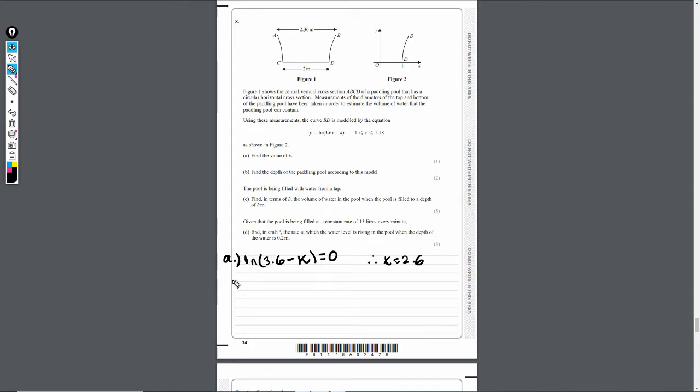Now part B, what's part B asking us to do? Part B says find the depth of the paddling pool according to this model. Again, we're using this model here. And we want to know what the depth of the paddling pool is. The depth will be when x is at its maximum, right? 1.18.